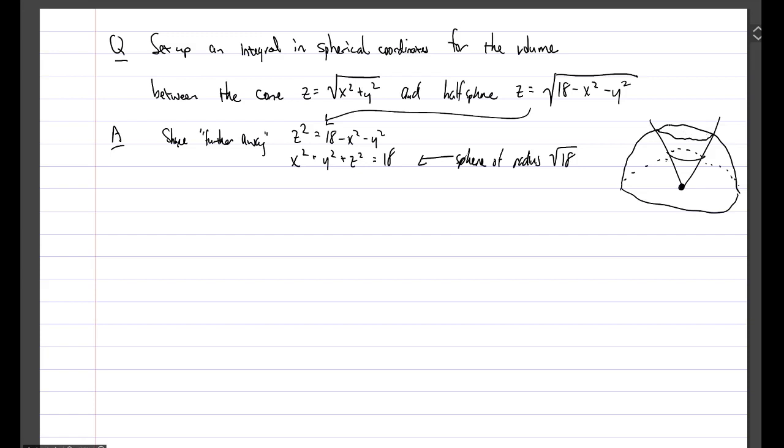For the region that we should shade in, the sphere is further away. So we can see from the picture that we're getting values of ρ, down here that are close to the origin. And then points that are further away as far away as root 18. So ρ should go between 0 and root 18.